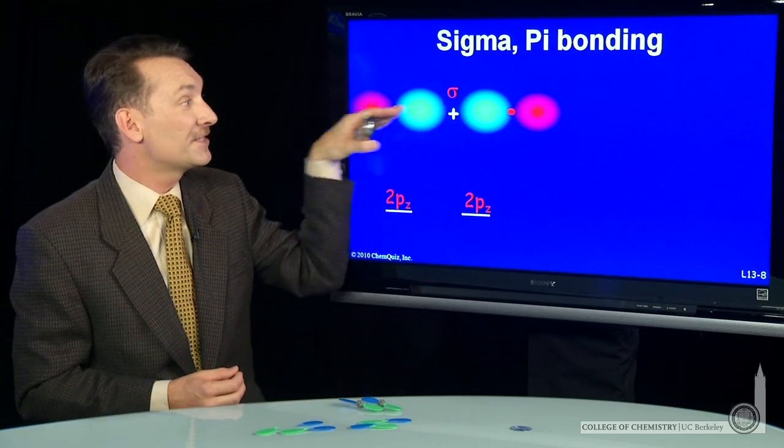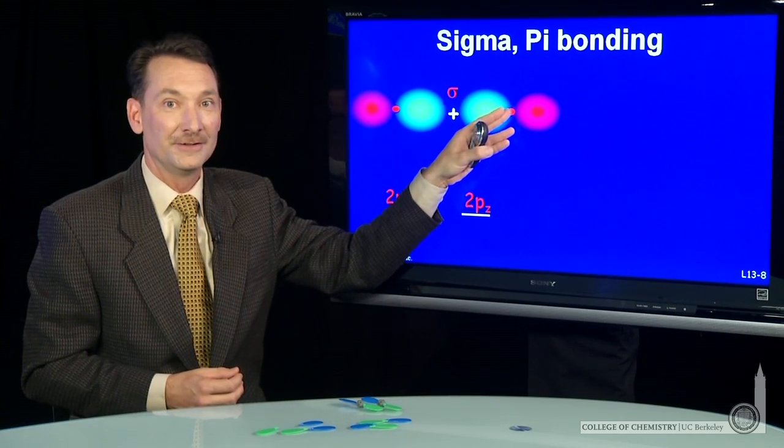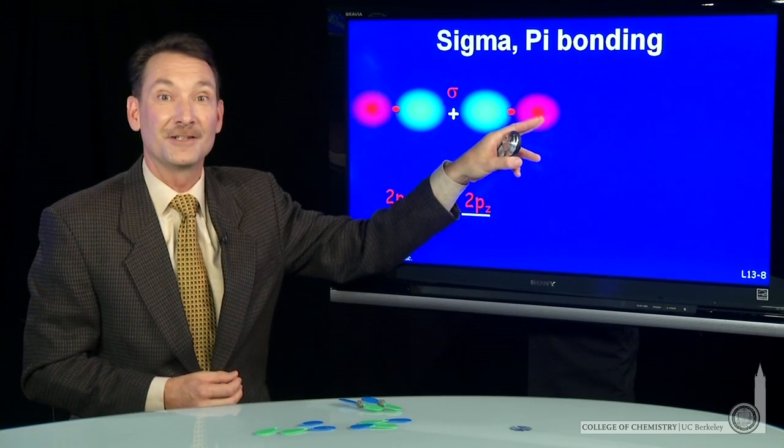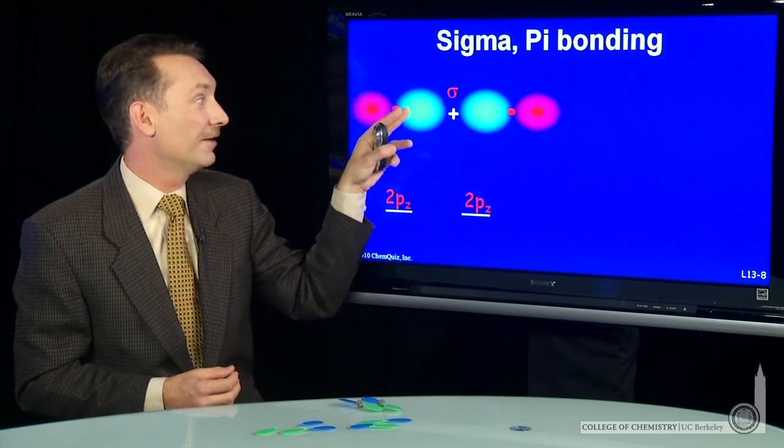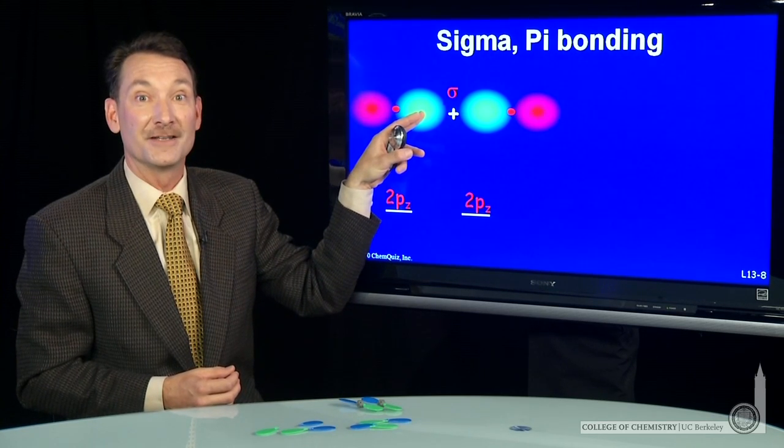So if this is the positive z axis, then this orbital has been multiplied by minus 1, because it has minus along the positive z axis, while this orbital has positive along the positive z axis.